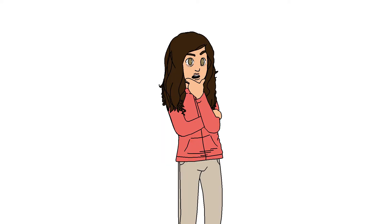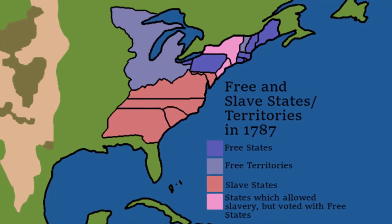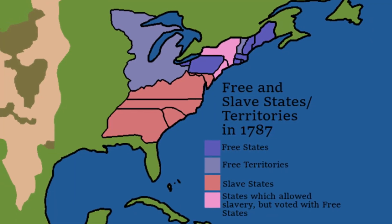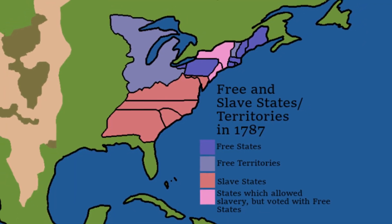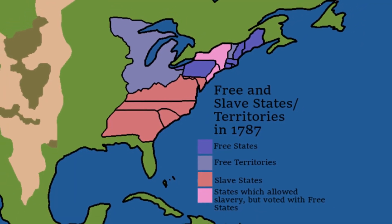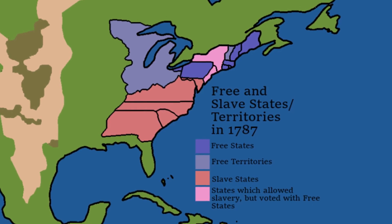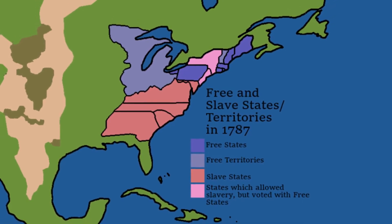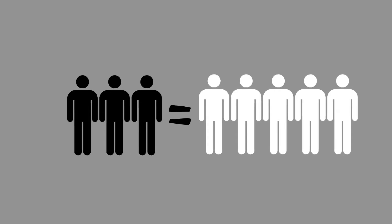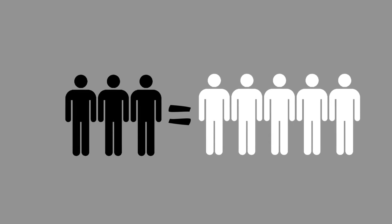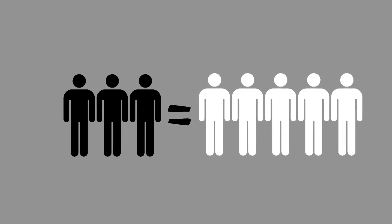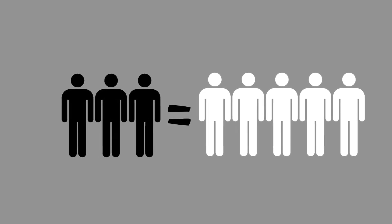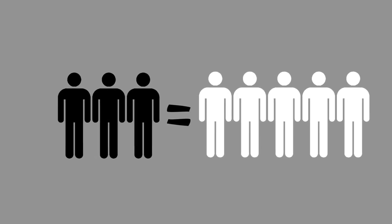One example of such a compromise is the Three-Fifths Compromise, a compromise between the slave states' desire to count all slaves as part of their populations in order to increase their state's political power, and the northern states' desire to exclude them from the count entirely, resulting in the compromise of counting each slave as three-fifths of a person when calculating political representation.